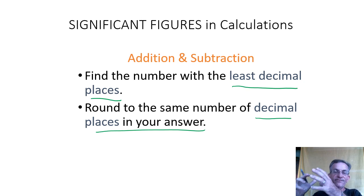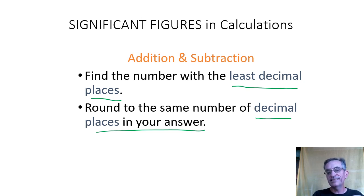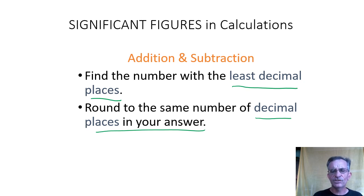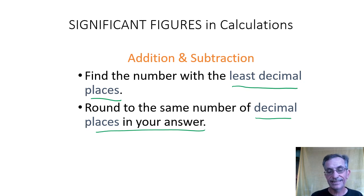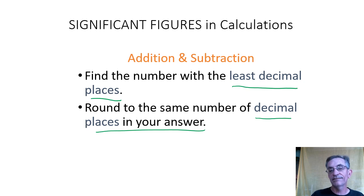So: multiplying and dividing, you go by sig figs. Adding and subtracting, you go by decimal places. The question becomes — if I'm doing both at the same time, which rule do I follow? Actually, it's a little bit more complicated than that. If you're doing adding and subtracting and multiplying and dividing in the same question, when you decide how to round, there's a specific way to do it.